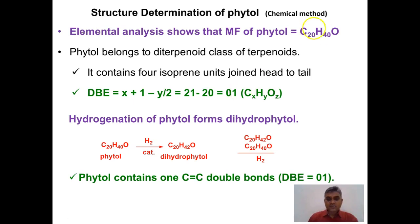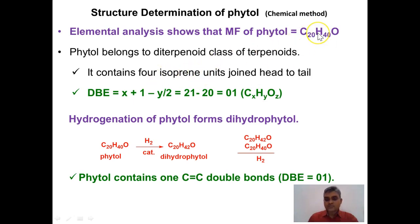Now let us discuss the structure of phytol on the basis of chemical methods of analysis. Elemental analysis has shown that the molecular formula of phytol is C20H40O. Since it contains 20 carbon atoms, phytol contains four isoprene units, and according to the special isoprene rule these four isoprene units may be connected through head-to-tail linkage, placing phytol in the class of diterpenoids. Additional information we get from this molecular formula is the degree of unsaturation or double bond equivalence.